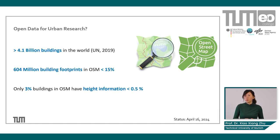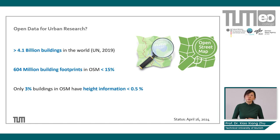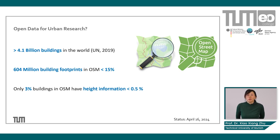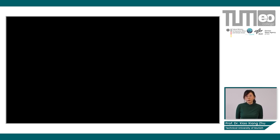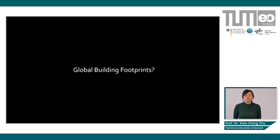That is less than 15 percent of all buildings. Of this 15 percent, only 3 percent actually have height information, which is less than 0.5 percent of all buildings. This is basically our status quo about open data for urban research. The question is how we can use AI4EO to get the global urban building footprint.